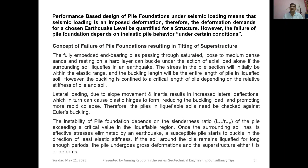Piles in liquefiable soils need to be checked against Euler's buckling. The instability of pile foundations depends on the slenderness ratio — L-effective divided by r-minimum (the minimum radius of the pile) — exceeding a critical value in the liquefiable region. Once the surrounding soil has its effective stresses eliminated by an earthquake, a susceptible pile starts to buckle in the direction of least elastic stiffness. If the soil around the pile remains liquefied for long enough periods, the pile undergoes gross deformations and the superstructure either tilts or deforms.